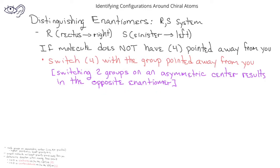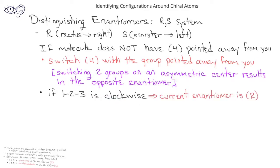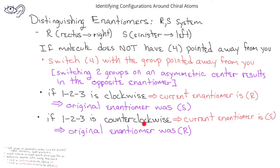Now that you've switched the lowest priority group and the group pointing away from you, if you go from 1 to 2 to 3 in a clockwise direction, the new molecule is R, which means that the original molecule was the S enantiomer. However, if going from 1 to 2 to 3 is in a counterclockwise direction, that means the new molecule, after switching the two groups, is an S enantiomer, and therefore the original enantiomer was the R configuration.